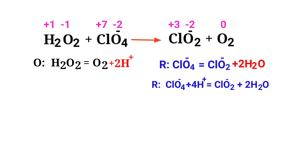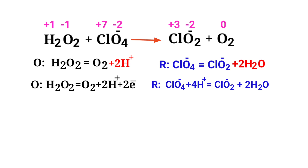For each half reaction, the sum of charges must be equal on both sides. In the oxidation half reaction, both sides are not equal. You cannot add protons to balance charges — instead, add two electrons to the right side to make both sides equal to 0. The charges are now balanced in the oxidation half reaction.